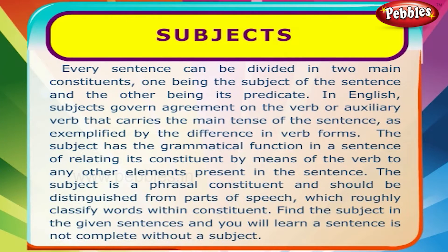Every sentence can be divided into two main constituents: one being the subject of the sentence and the other being its predicate. In English, subjects govern agreement on the verb or auxiliary verb that carries the main tense of the sentence.